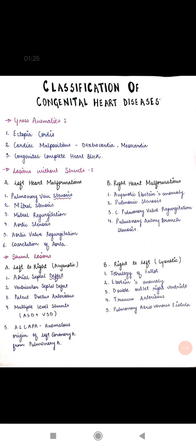A shunt is basically a passage or common channel that connects two blood vessels and is responsible for mixing of blood between them. Lesions without shunt include stenosis — narrowing of the blood vessels. Lesions with shunts include defects, or holes, in the heart.